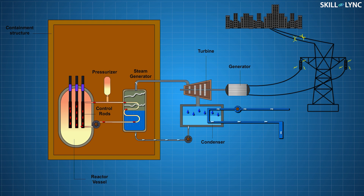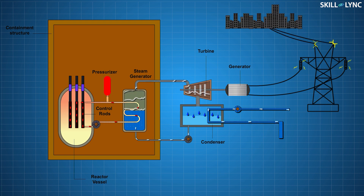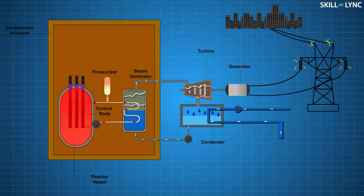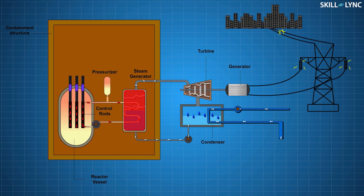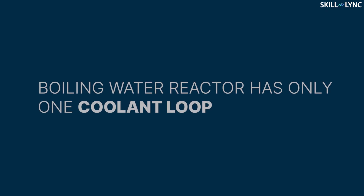As the name suggests, the characteristic of a pressurized water reactor is the pressurizer, which keeps the working fluid under pressure. Due to high pressure, the working fluid can be used at higher temperatures without boiling. Thus, heat can be extracted from the core more efficiently to generate electricity.